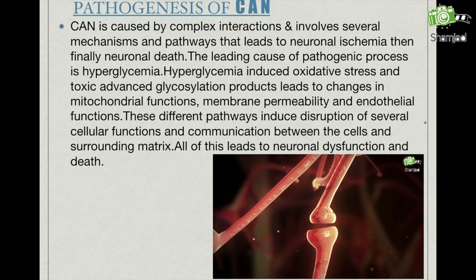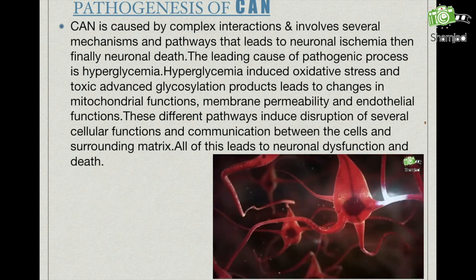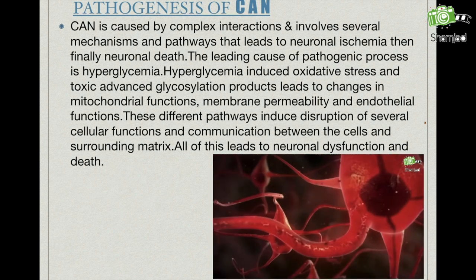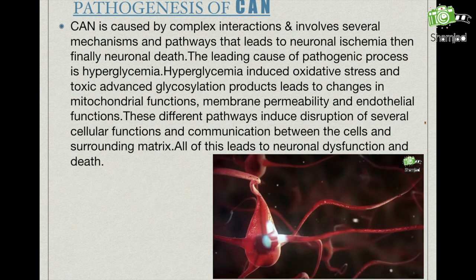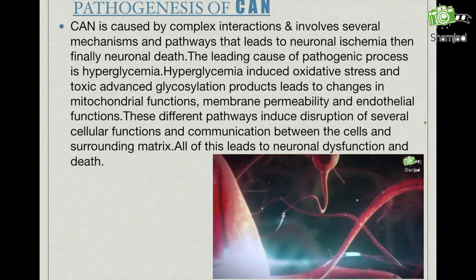CAN is caused by damage to the autonomic nerve fibers which innervate the heart and blood vessels, leading to changes in the cardiovascular dynamics. CAN, cardiac autonomic neuropathy, is caused by complex interactions and involves several mechanisms and pathways that lead to neuronal ischemia and finally neuronal death.